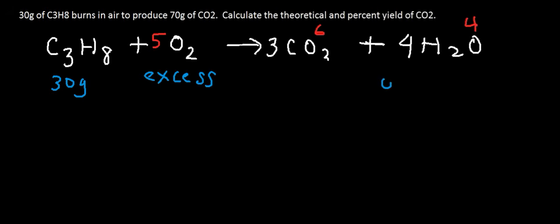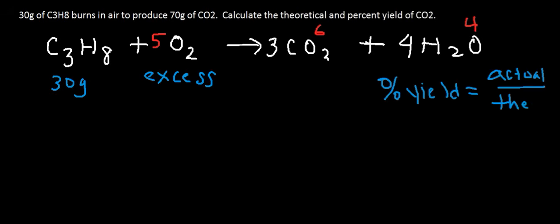The equation for percent yield is the actual yield divided by the theoretical yield, times 100%. You need to know the difference between the two. The theoretical yield is what you calculate — it's the maximum amount of product you can get if your reaction is 100% efficient. In actuality, you never get 100% yield; it could be 80%, 70% — it's never perfect. The actual amount you get in a reaction is your actual yield.